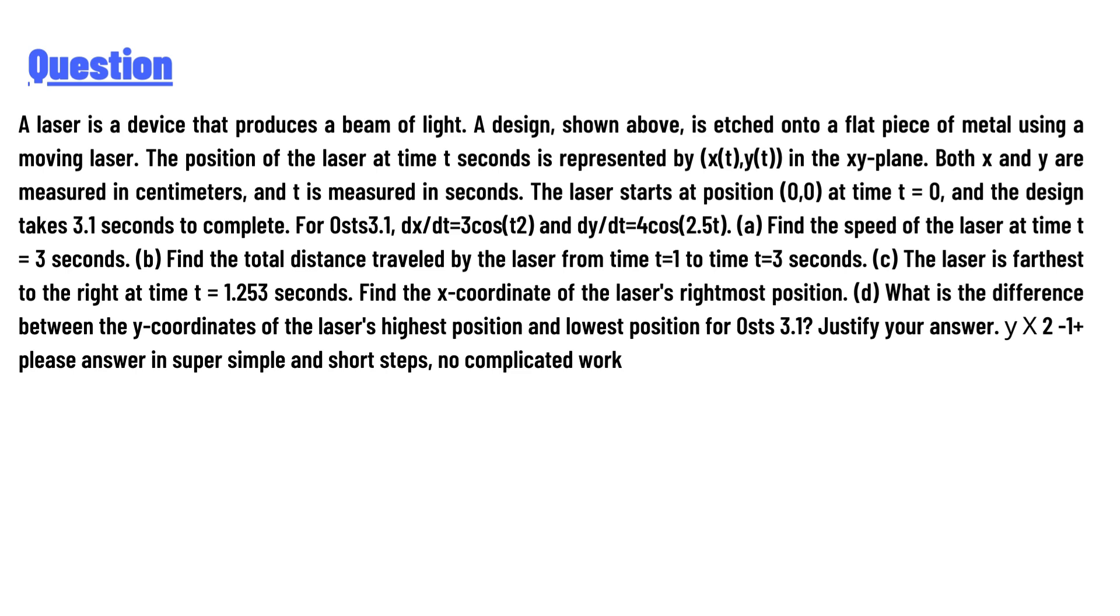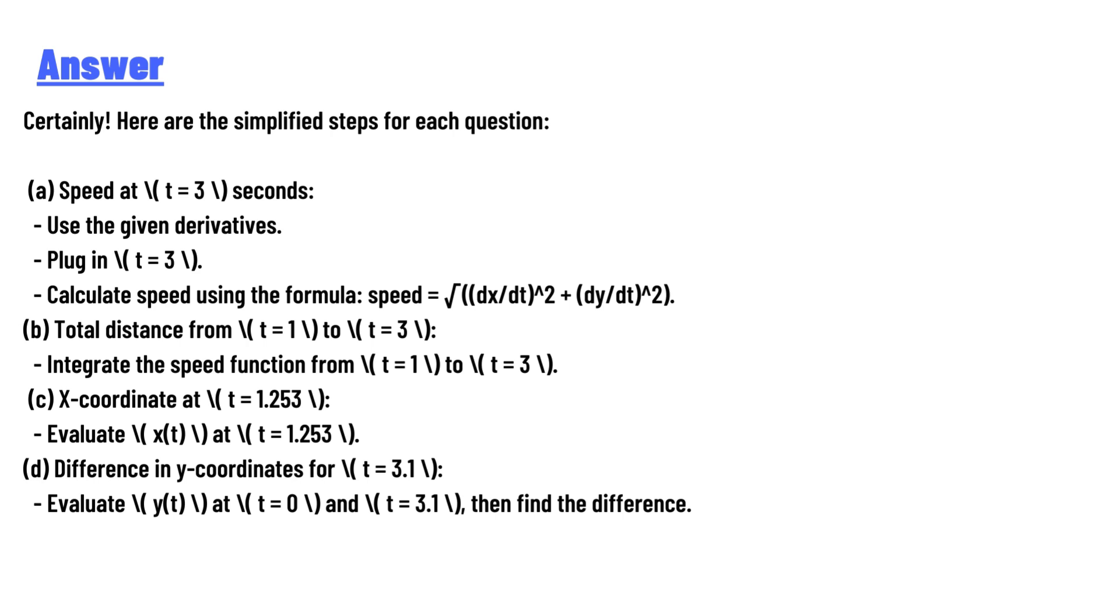Answer: Here are the simplified steps for each question. (a) Speed at t=3 seconds: Use the given derivatives. Calculate speed using the formula: speed = √[(dx/dt)² + (dy/dt)²].